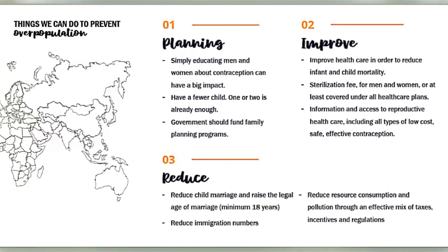Number two: improve. Improve healthcare in order to reduce infant and child mortality, as well as sterilization options for men and women, or at least covered under all healthcare plans. Also, provide information and access to reproductive healthcare, including all types of low-cost, safe, effective contraception.